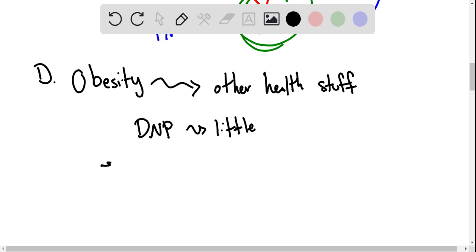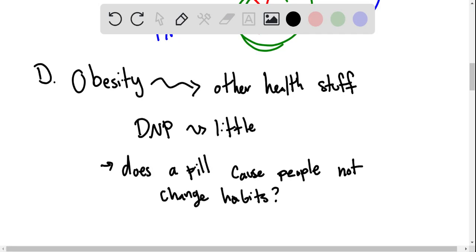essentially, does losing weight with a pill cause people to not actually change their habits? So if someone is indeed unhealthy, they're eating lots of fast food and junk food. And if eating more vegetables were going to help them lose weight, that would be a healthier lifestyle. But if they can continue to eat high fat content and lose weight, they won't. They just eat the high fat content and therefore not actually become healthier.